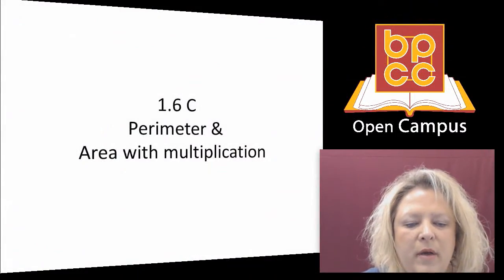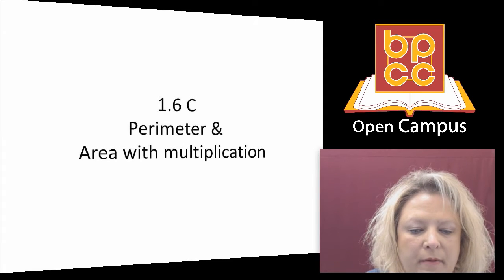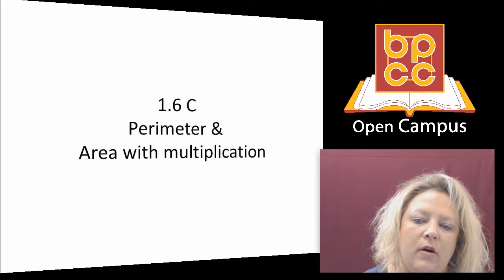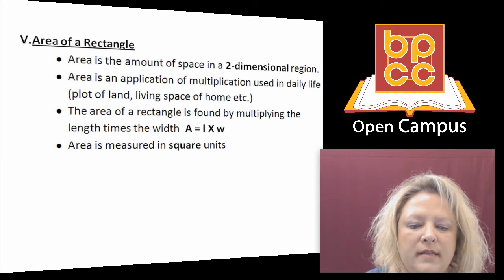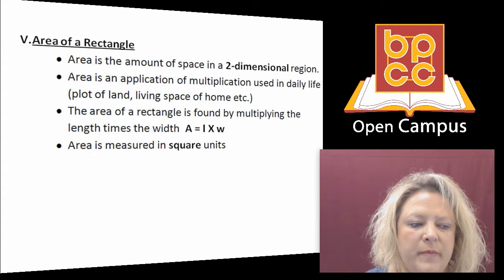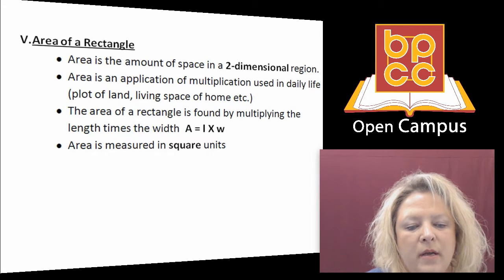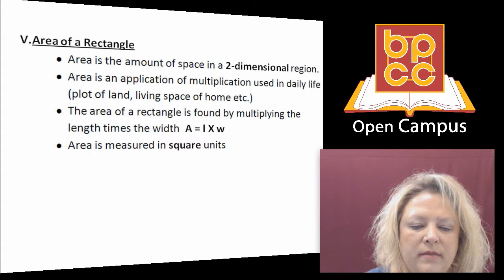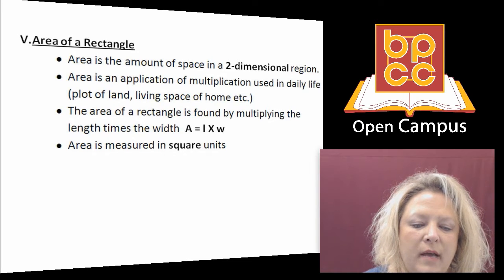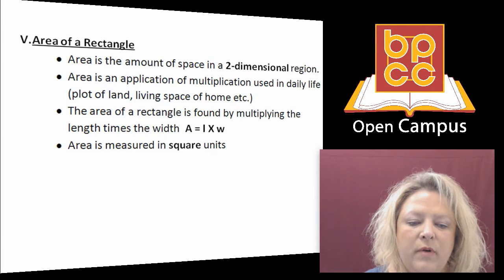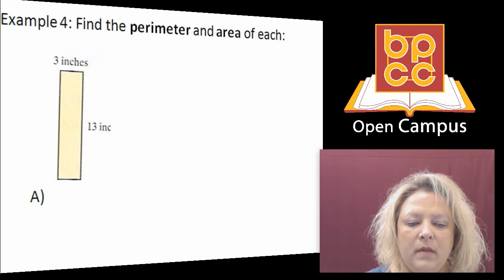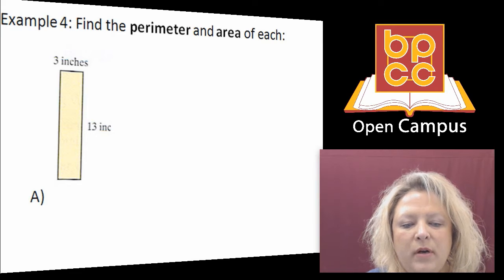Today we're going to talk about perimeter and area with multiplication. First, we need to know what area is. Area is when you're talking about a two-dimensional space, like putting carpet in your house or painting a wall. We find area by using length times width, especially when we're talking about a four-sided figure such as a rectangle or a square.